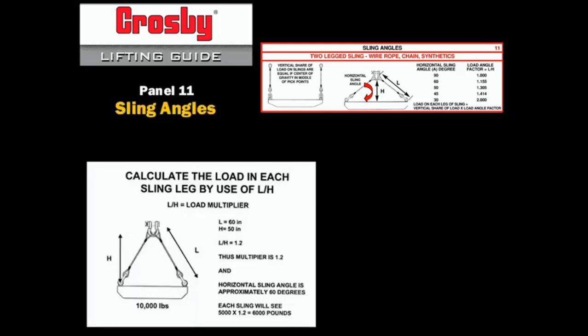In this example, the sling length is 60 inches, and the height of the rigging triangle is 50 inches. Notice that the center of gravity is an equal distance to both slings. Length over height is thus equal to 60 over 50, or 1.2. We thus estimate that the horizontal sling angle is 60 degrees, and that the load angle multiplier is 1.2.